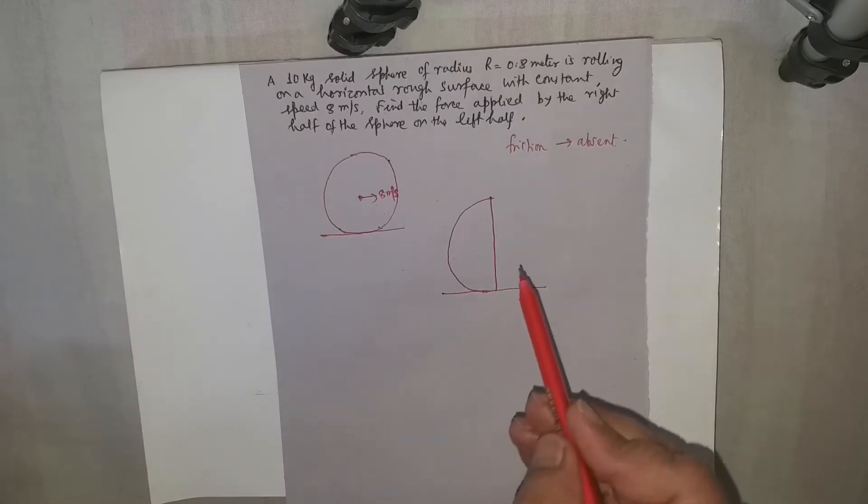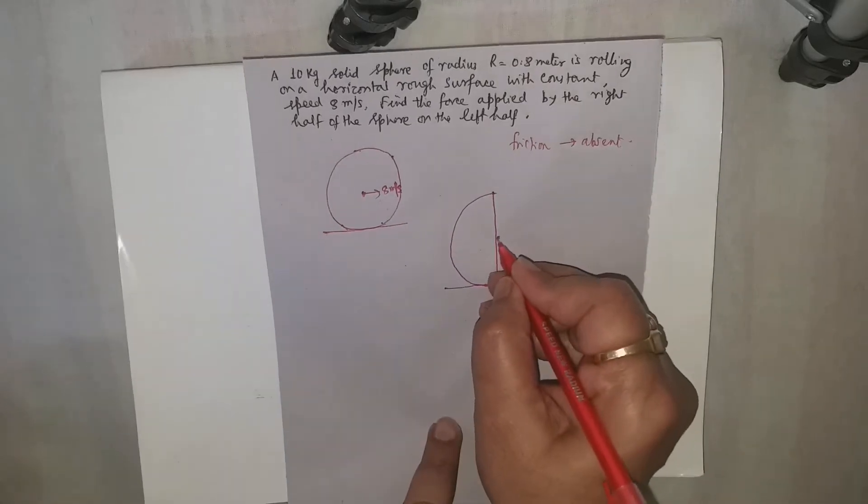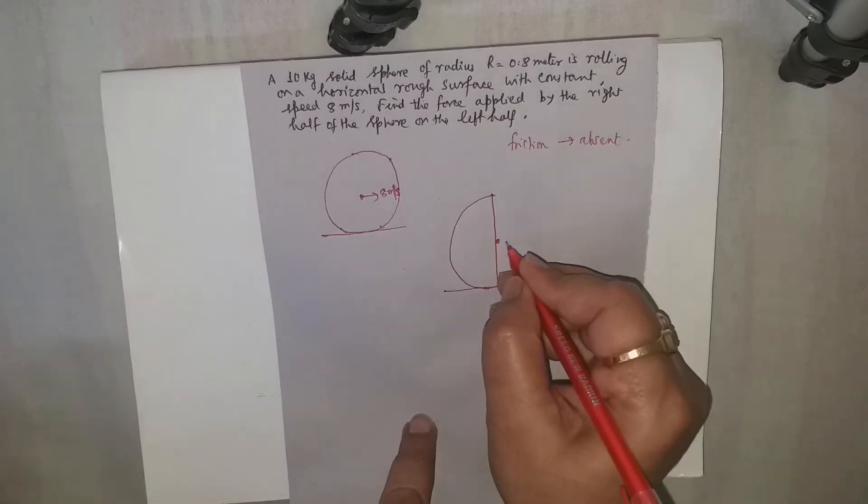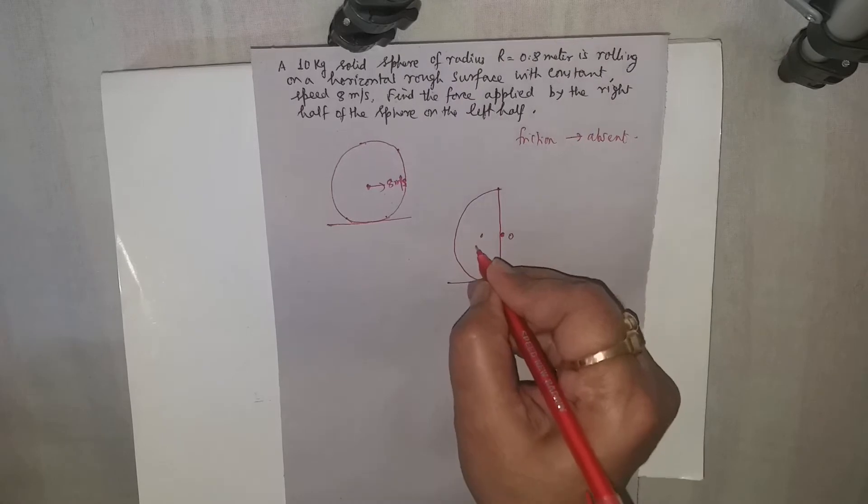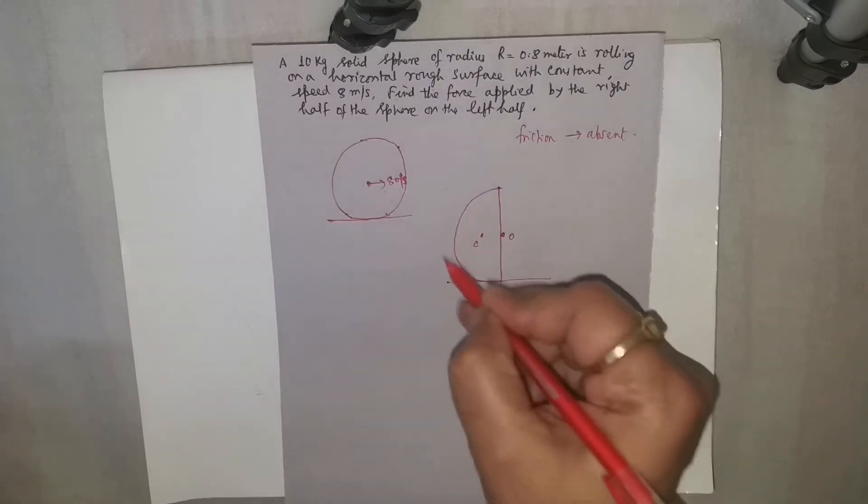Just observe that if a point is taken, this is the center. Let us say this center is O and this is the center of mass of this half part.